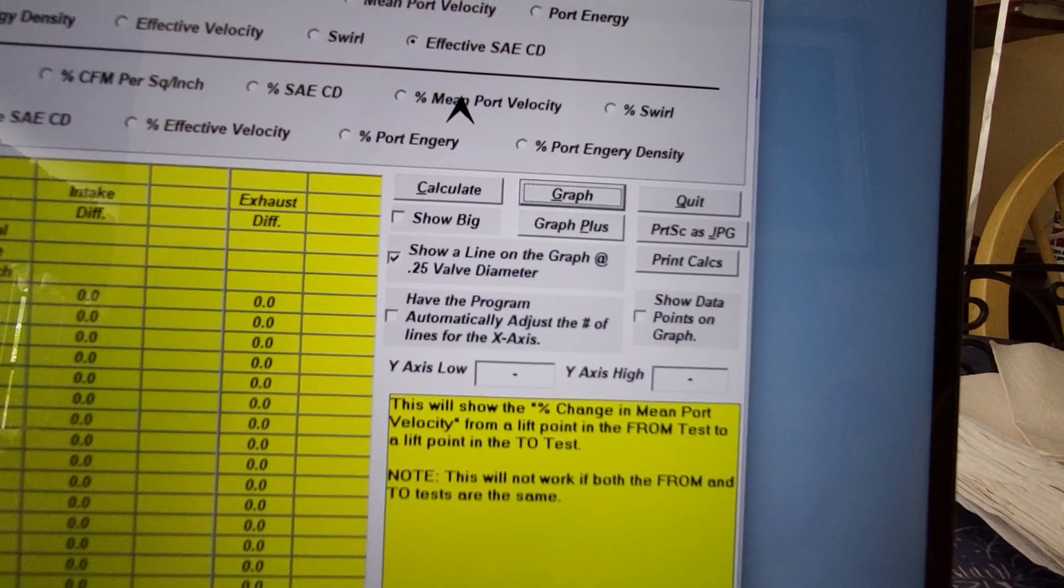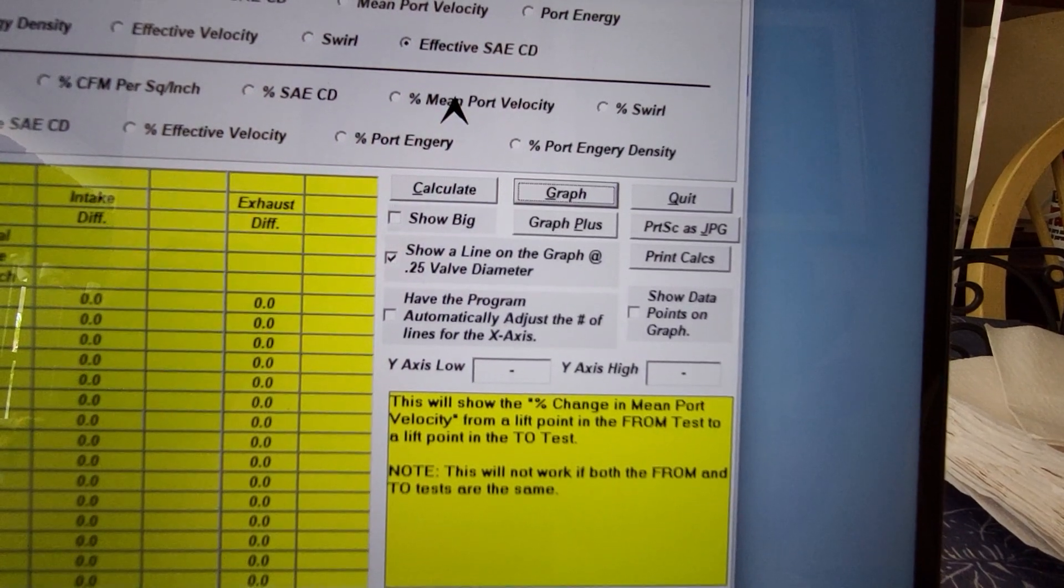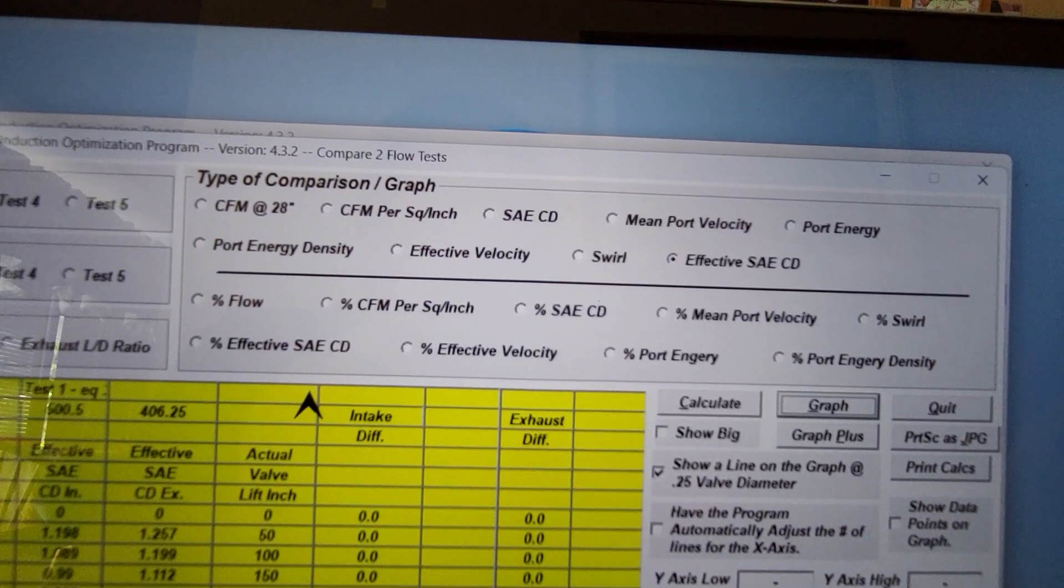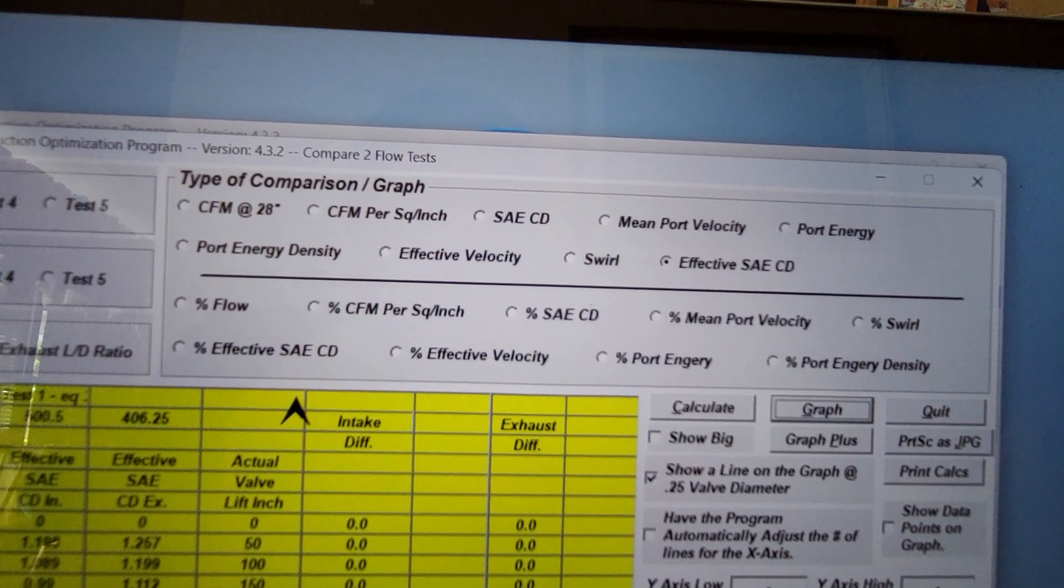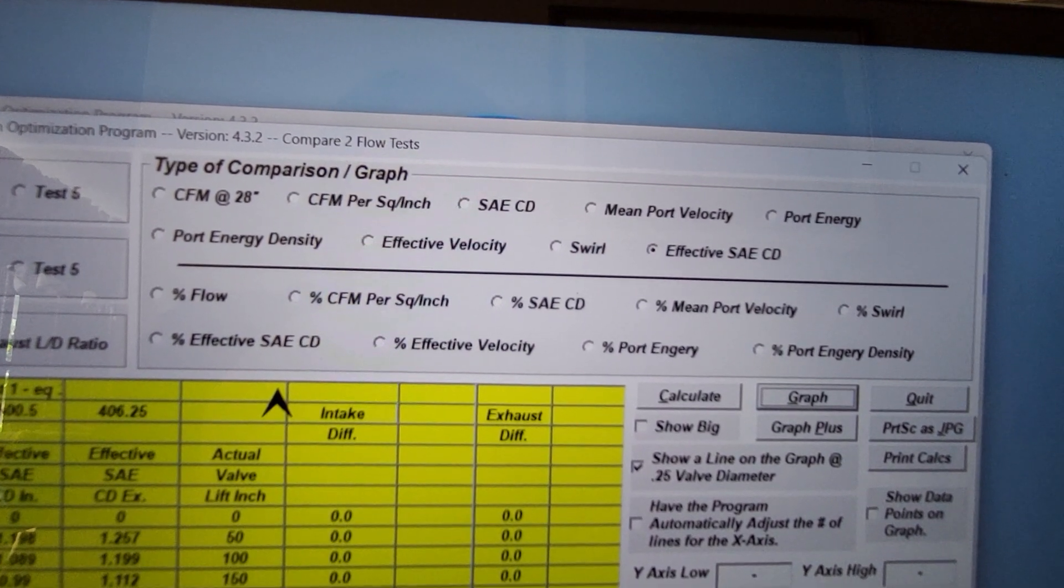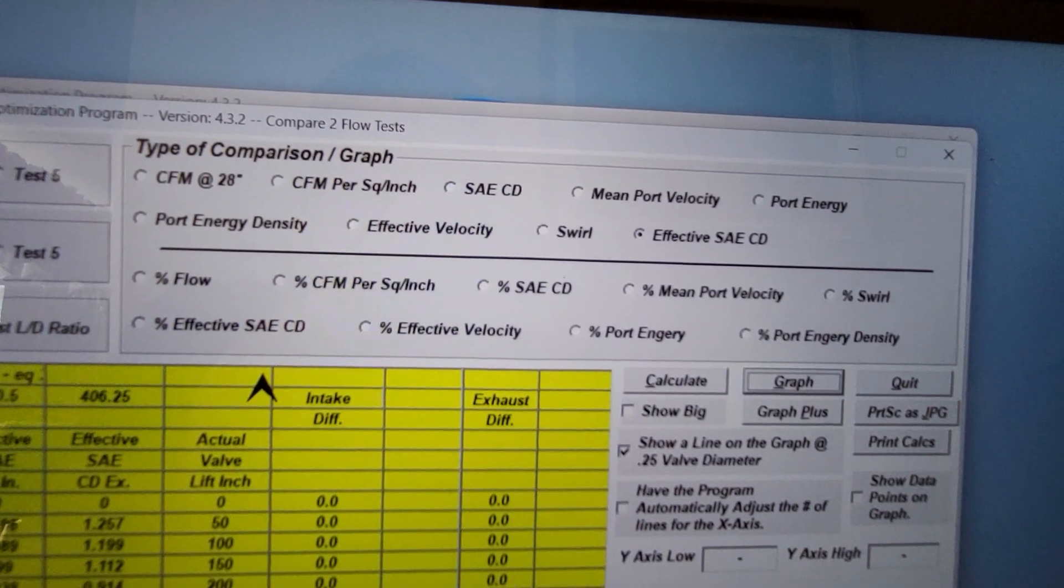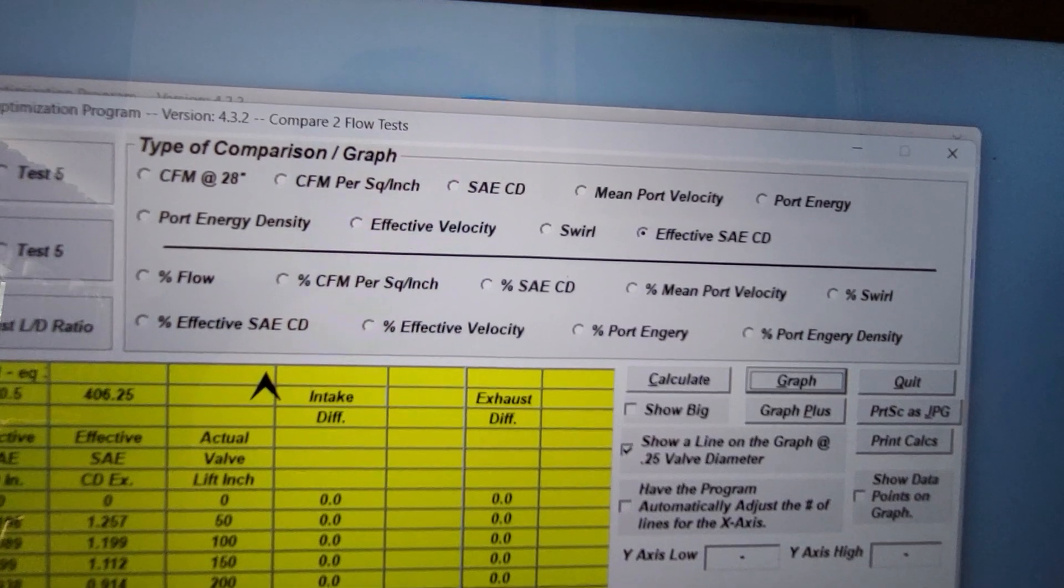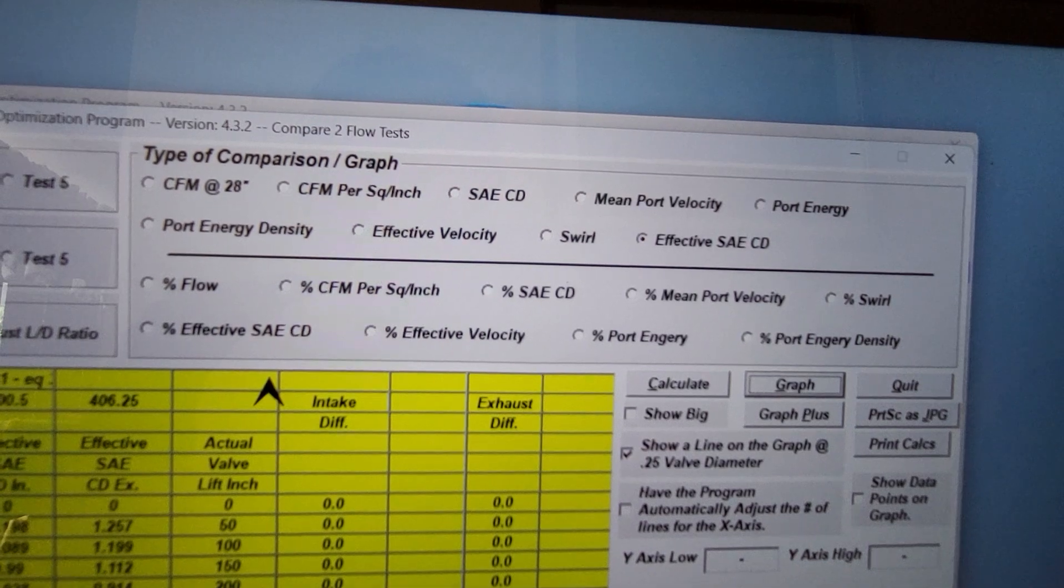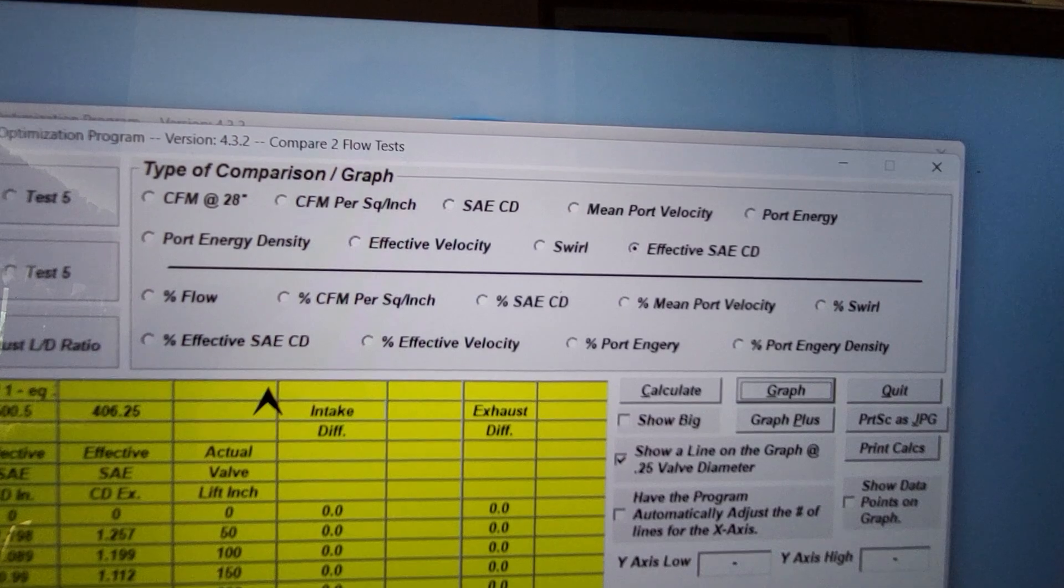Stan added a bunch of stuff to this program. I'm going to have to spend some time with it before I talk about it a whole lot. That may take some time so be patient with me. All of the percent changes, you would need two different curves inputted, so maybe the next project I get I will do all of the measuring and work up on a completely stock port, and then we can do the percent change on a finished port. That'll be interesting to take a look at.